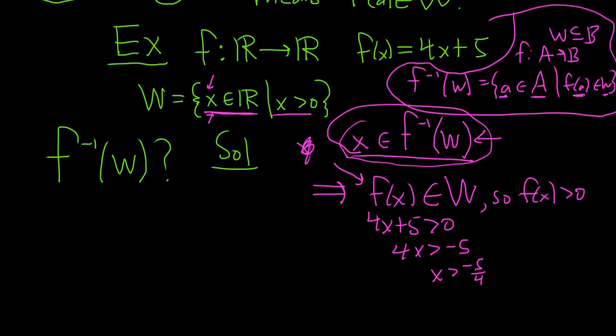So that's it. So whenever x is in this set, we use the definition. Oh, that was pretty cool. We got this. We solve for x. And so we know that it's this set here, negative 5 fourths to infinity, right? All the x is bigger than negative 5 fourths. So this will be the inverse image of W. So that was just a quick example of what it means.